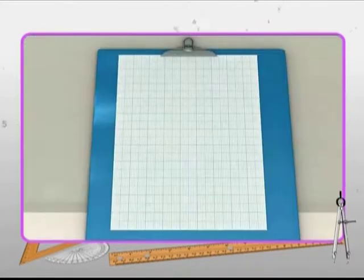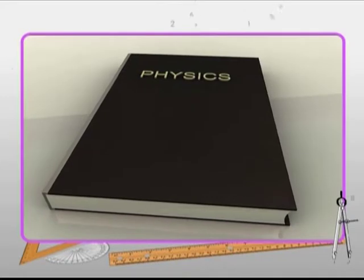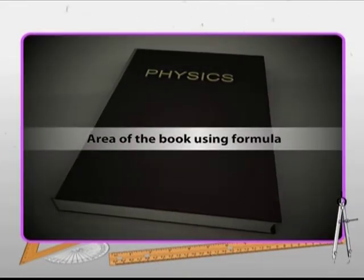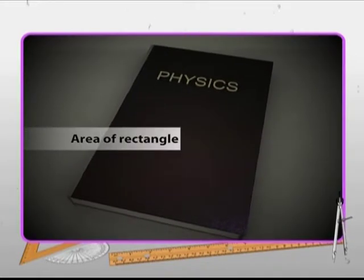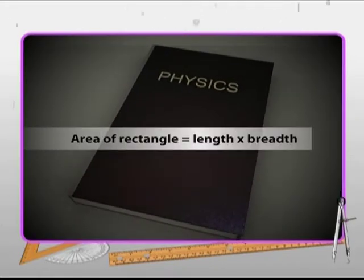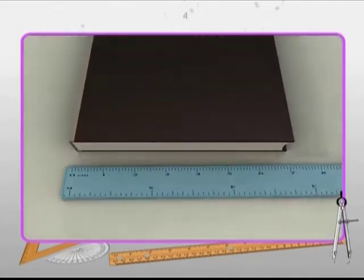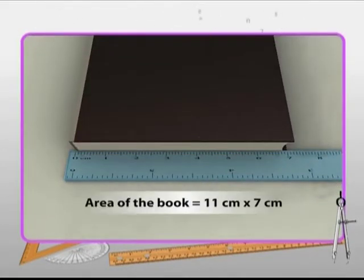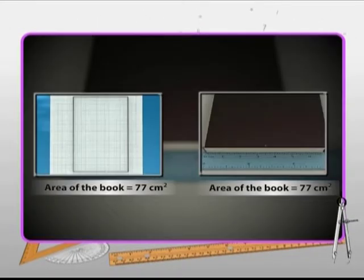Let us now verify graph paper method by finding the area of rectangular shape of the surface of the book using formula. You know that the area of a rectangle is equal to the product of its length and breadth. Use a scale to measure the sides of the book and then multiply its length and breadth to obtain the area. You will see that the area of the book is equal in both the cases.